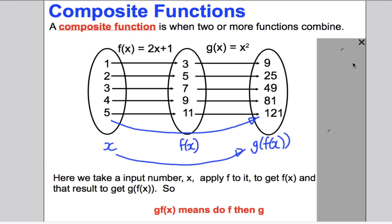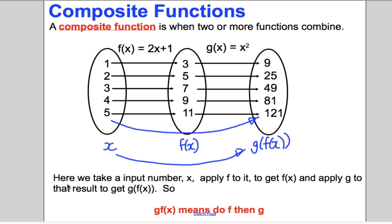The way we think of this is: take an input number x, apply F to it and get F(x), then apply G to that result and get G of F of x. So G of F of x means that you do F first and then G. We need to be familiar with that — G of F of x means do F first and then G.